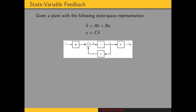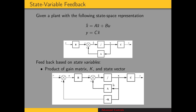Let's consider a plant that has this state space representation. Here is a block diagram showing this — a single input, single output system. The thin lines represent scalars and the bold or thick lines represent vectors. In classical controls, we would feed back the output to a summing junction, and the difference between the input and the output was roughly the error. But now we're going to feed back something based on the state variables. What we're feeding back is the product of the gain matrix K and the state vector x.